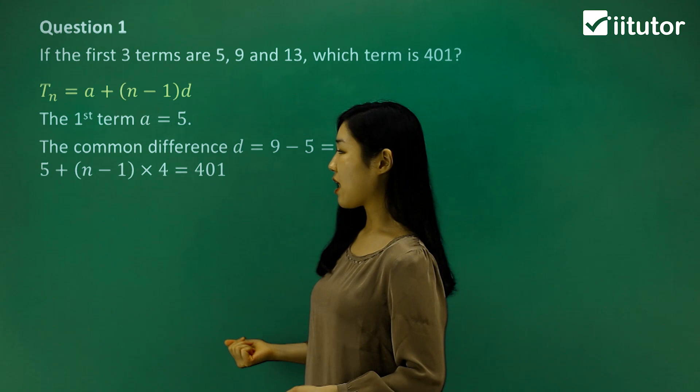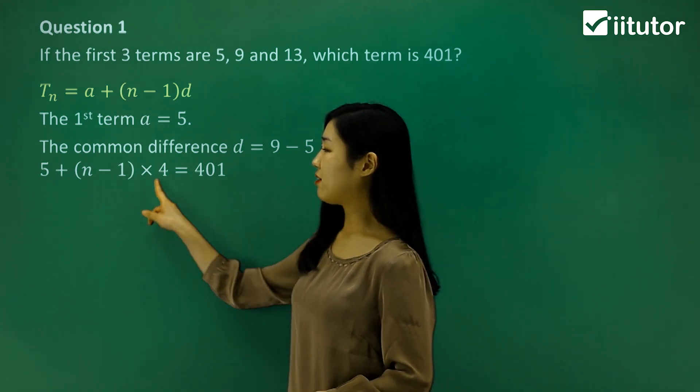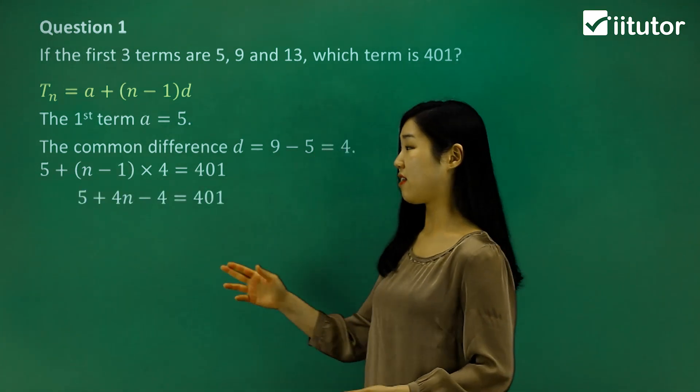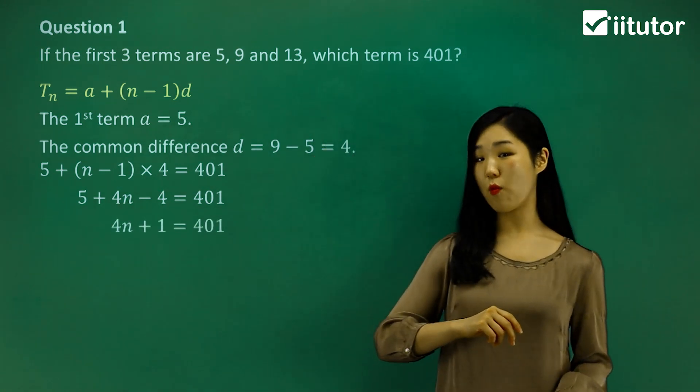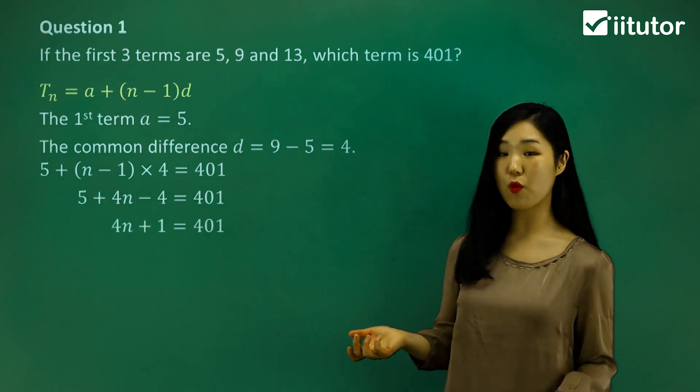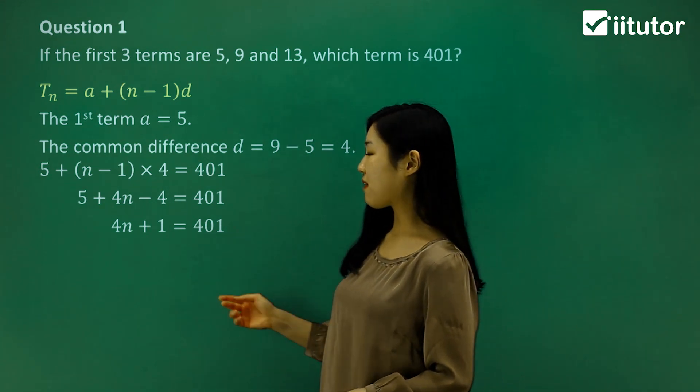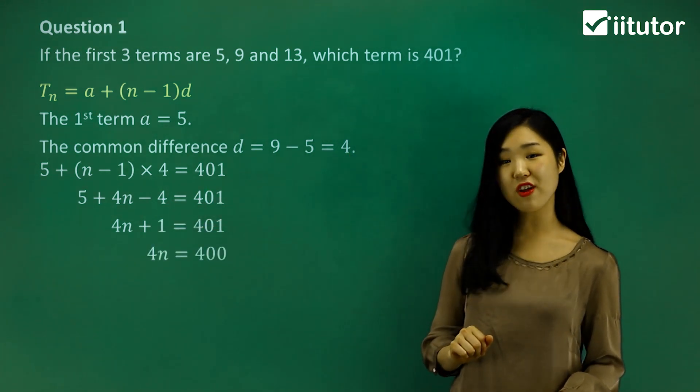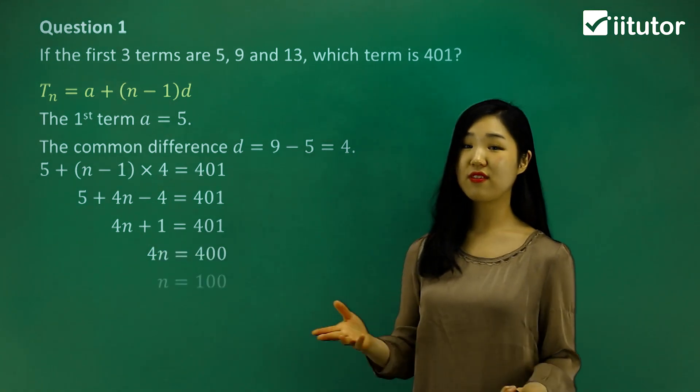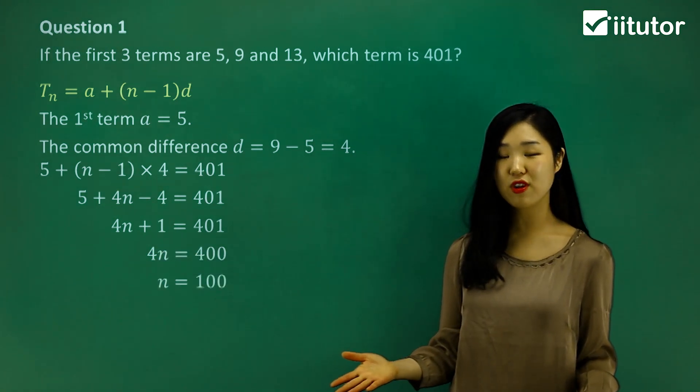Let's solve the algebra. I'm going to expand it out. 4 times n is 4n, and 4 times negative 1 is negative 4. 5 minus 4 is 1, so I make the left-hand side 4n plus 1. Simplify further: I subtract away the 1, so 401 minus 1 is 400. Then finally divide by 4. It's going to be 100. So we found n equals 100.